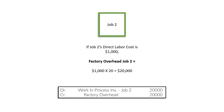What we were doing before was piling up costs into the factory overhead account by debiting it — adding all the indirect materials, indirect labor, supplies expense, and utilities expense into factory overhead. At the end of the period, we use our predetermined overhead rate to apply this and transfer the cost from our factory overhead into the specific jobs, depending on what our predetermined overhead rate is.